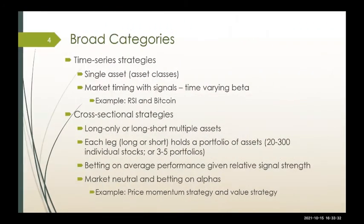In general, we have two broader categories of trading strategies. The first type is time series strategies. Typically, you focus on a single asset such as Bitcoin, or a single asset class such as the S&P 500 stock index, large cap stocks, small cap stocks, international stocks, and so on. You build your trading model based on signals — technical indicators based on historical data or public announcements — and use the signal to time your trades, either going in, doubling down, or staying off the market. This is called a time-variant beta strategy.